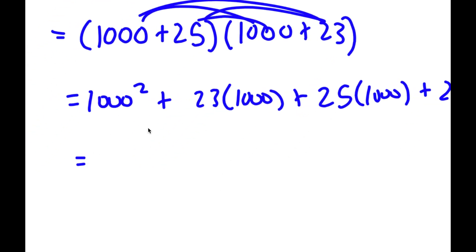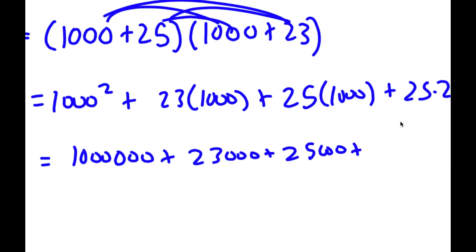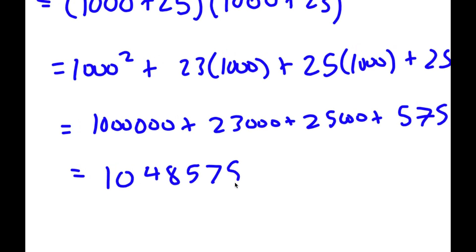So now we're going to simplify this. 1,000 squared is 1,000,000. 23 times 1,000 is 23,000. 25 times 1,000 is 25,000. And 25 times 23 is 575. All we have to do is add all of these, and this is going to equal 1,048,575. So this is my answer.